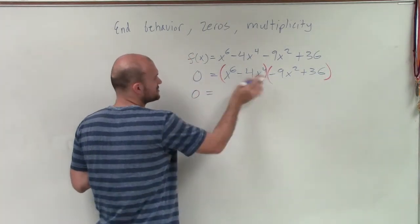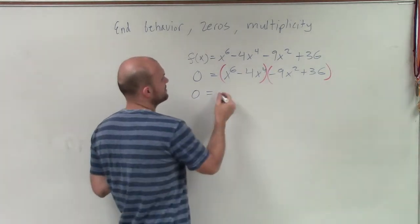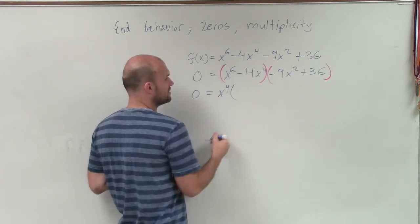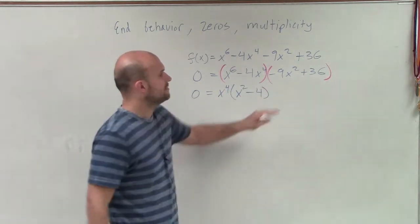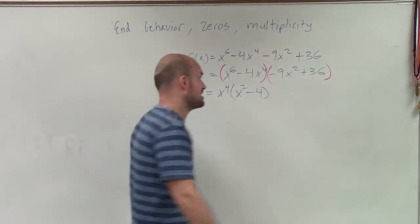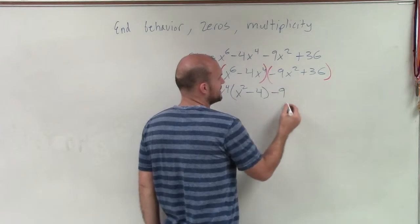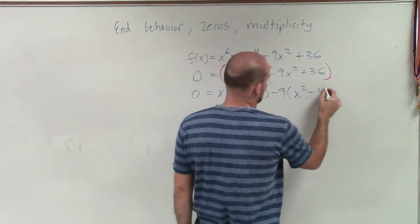By grouping the first two terms, I say what does x⁶ - 4x⁴ have in common? Well, I can factor out an x⁴ out of each one of those, leaving me with x² - 4. Then over here, what does -9x² + 36 share in common? I can factor out a -9, leaving me with x² - 4.